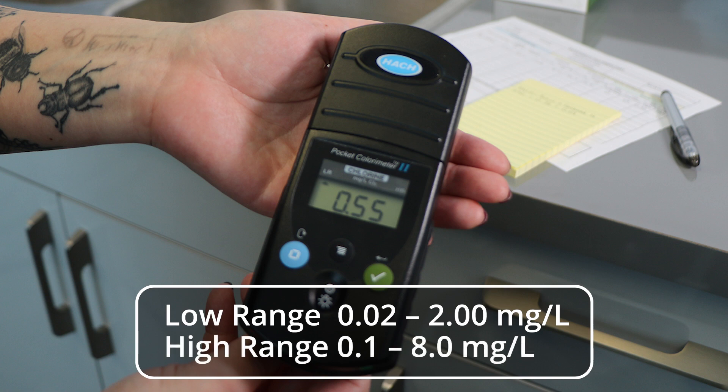The high setting reads measurements between 0.1 and 8.0 milligrams per liter. Please note that different test kits may have slightly different ranges.